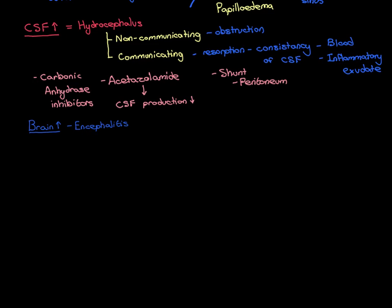We also bring in loads of white blood cells from the bloodstream into the tissue fluid of the brain. The inflammatory exudate and white blood cells take up space, and therefore we are expanding the volume of brain tissue when encephalitis occurs. This can therefore lead to intracranial hypertension, making encephalitis a cause of raised intracranial pressure.